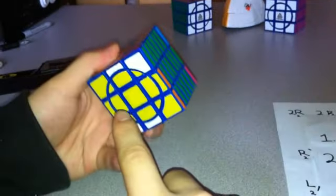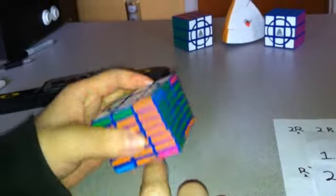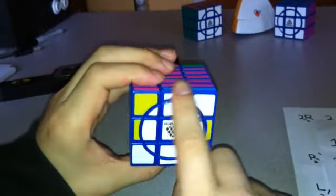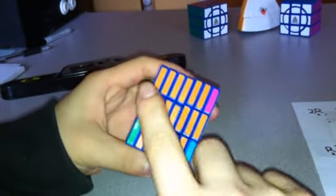Now I want to first put all of the white pieces, or yellow, it doesn't matter, all these edge pieces onto the right spot. I want an orange and white over here since orange and blue is already solved.